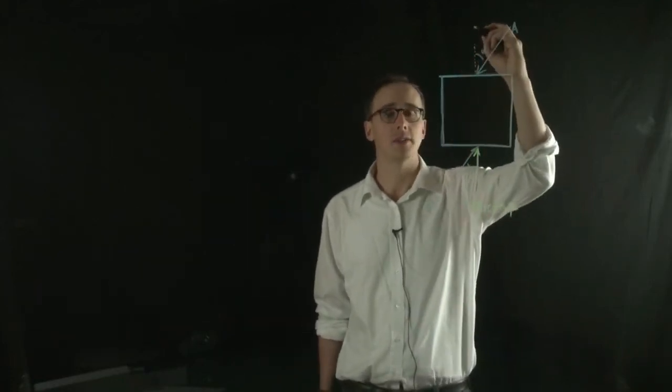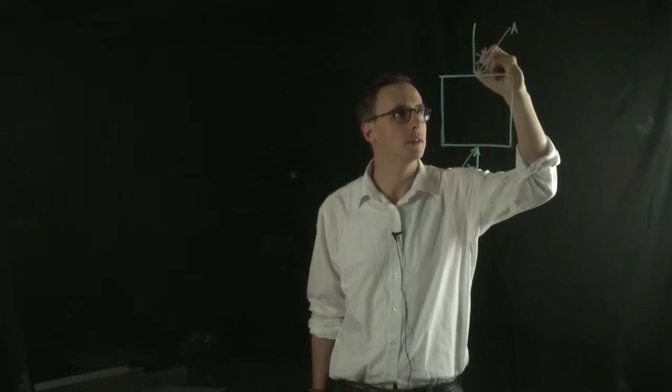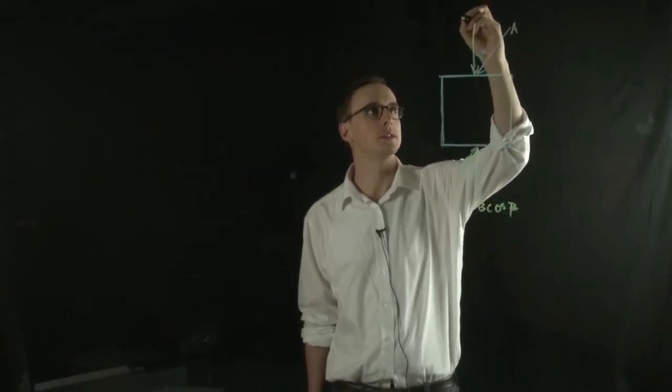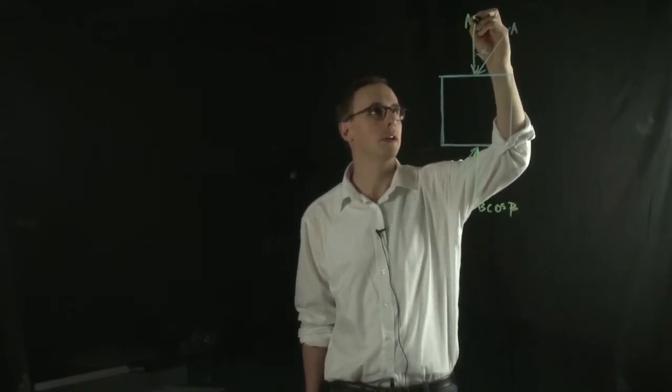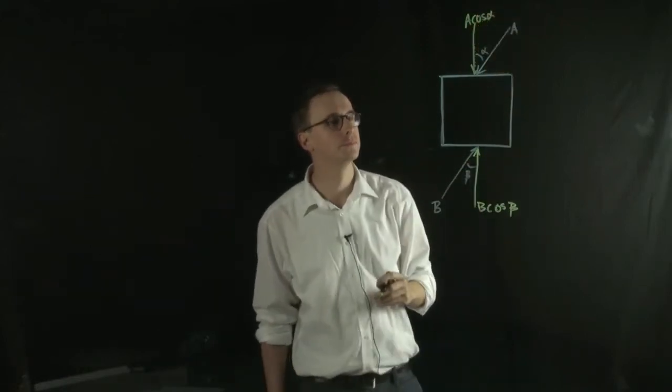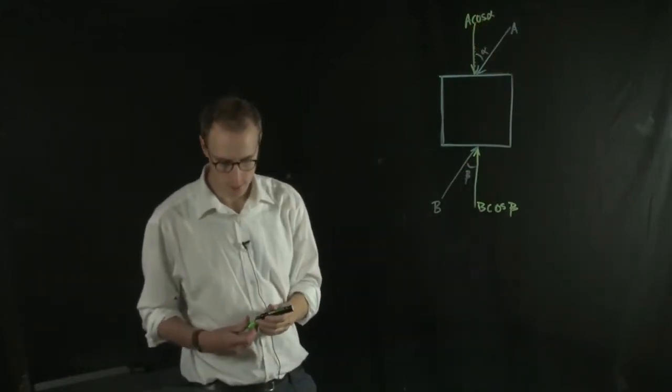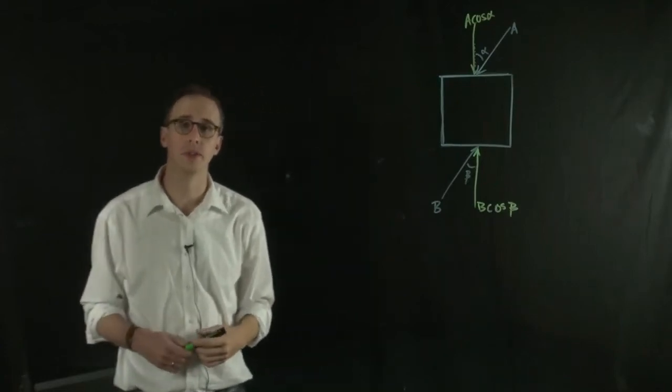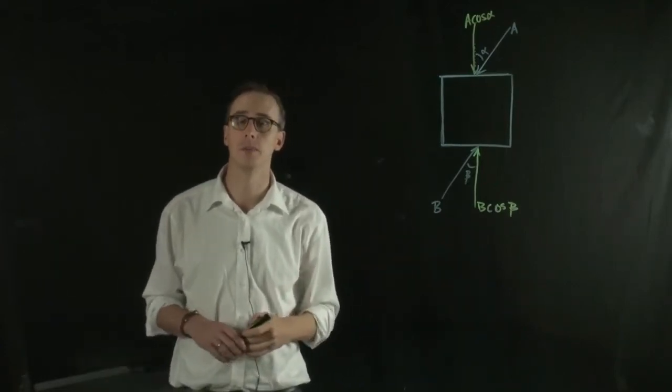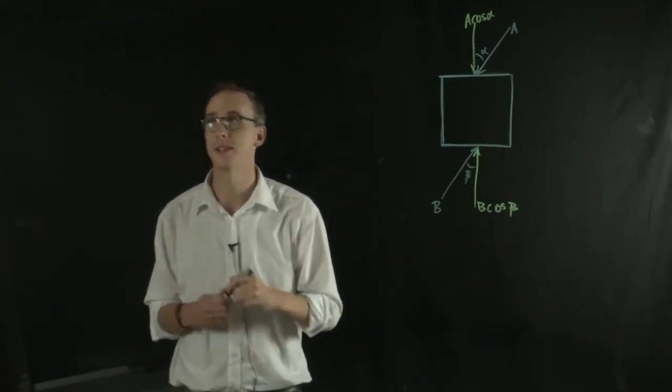And A has a vertical component. And that's equal to A cosine alpha. So for static equilibrium to be true, A cosine alpha must be equal to B cosine beta.